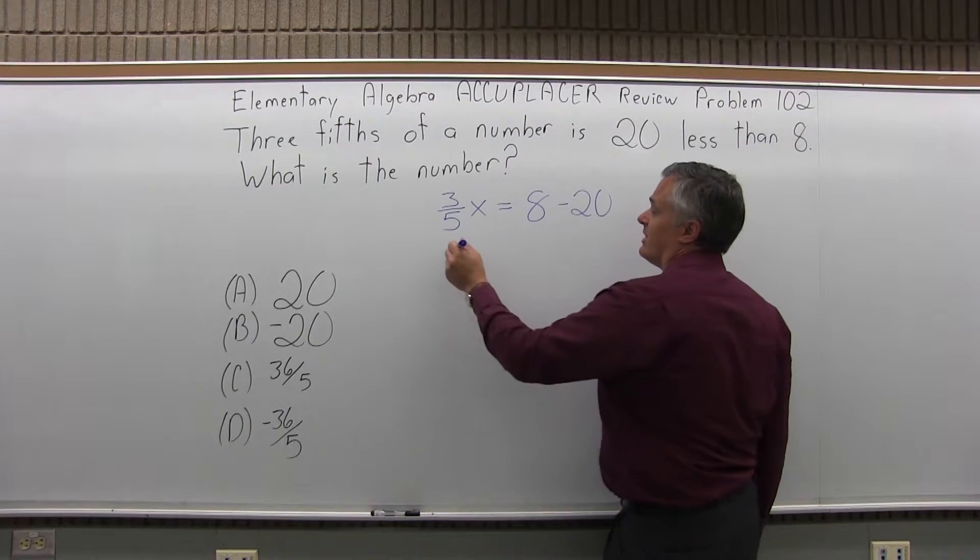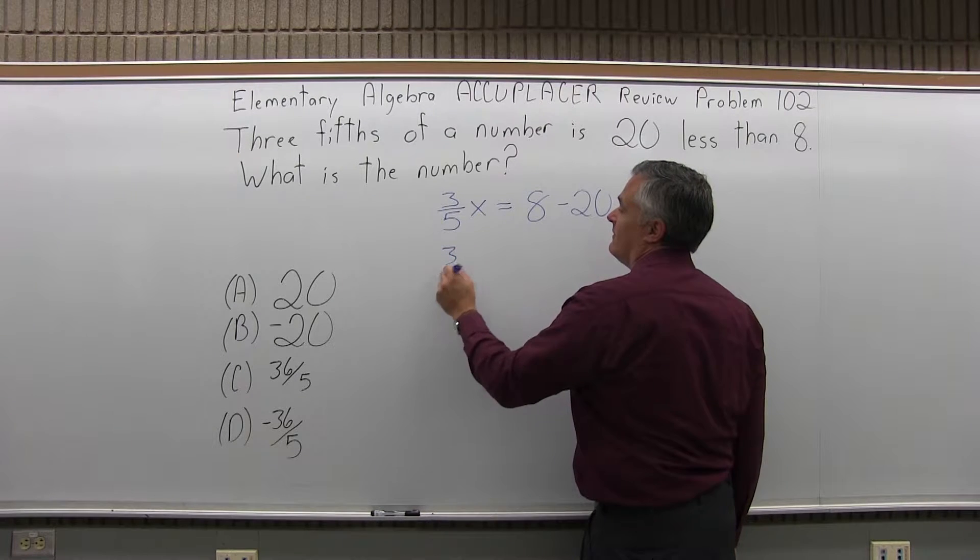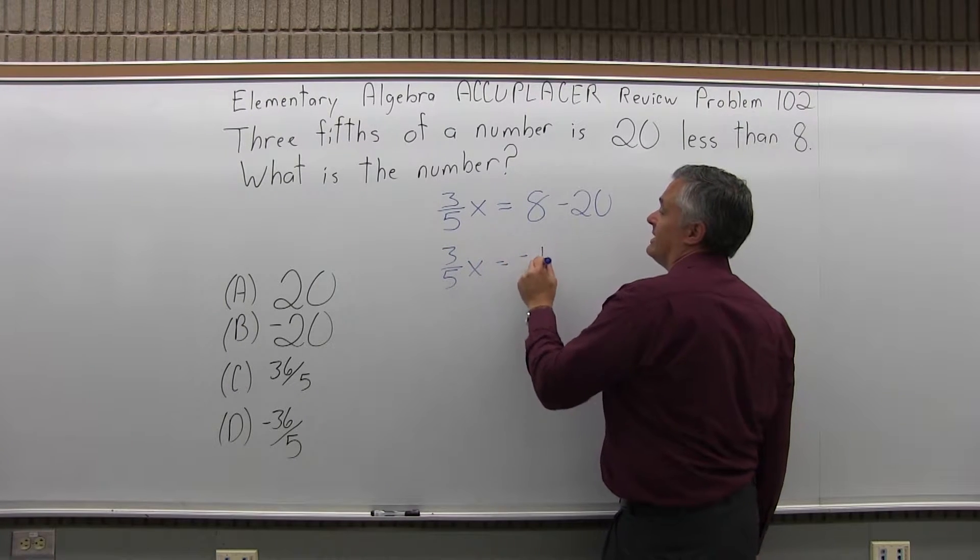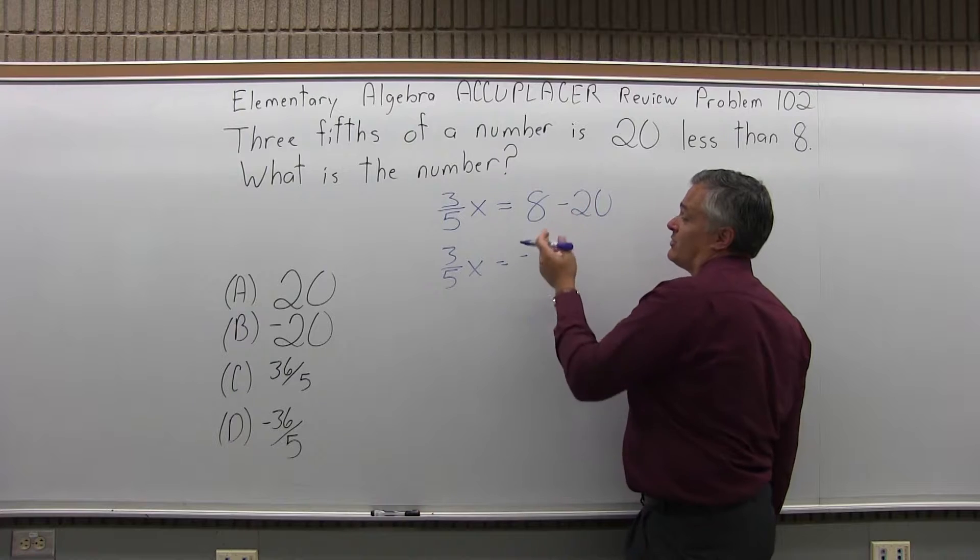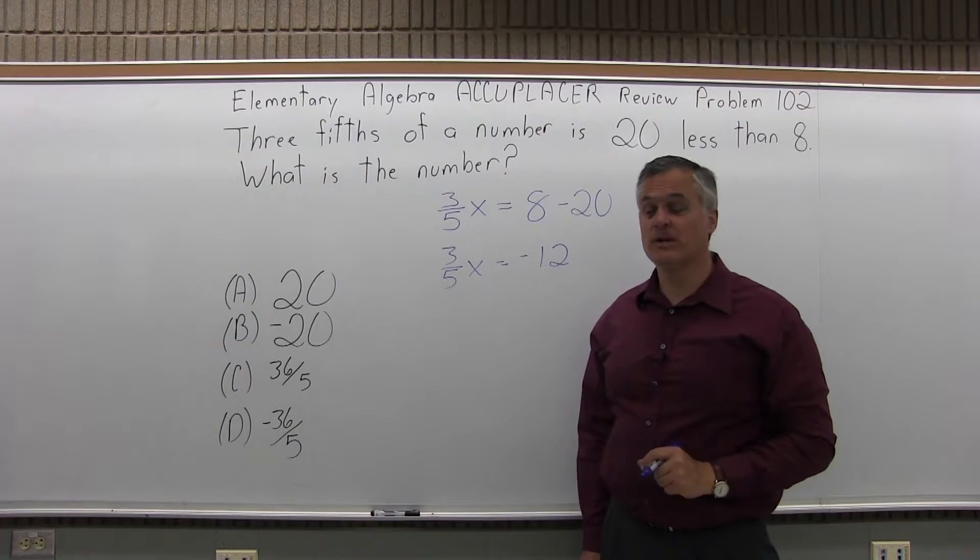Now to solve the equation, let's start with three-fifths x equals negative 12. 8 minus 20 is negative 12, that cleans it up a little bit.